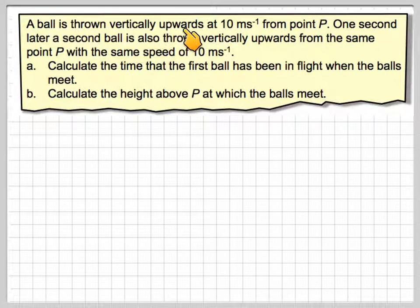A ball is thrown vertically upwards at 10 metres per second from point P. One second later, a second ball is also thrown vertically up from the same point with the same speed of 10 metres per second. Calculate the time that the first ball has been in flight when the balls meet, and calculate the height above P at which the balls meet.